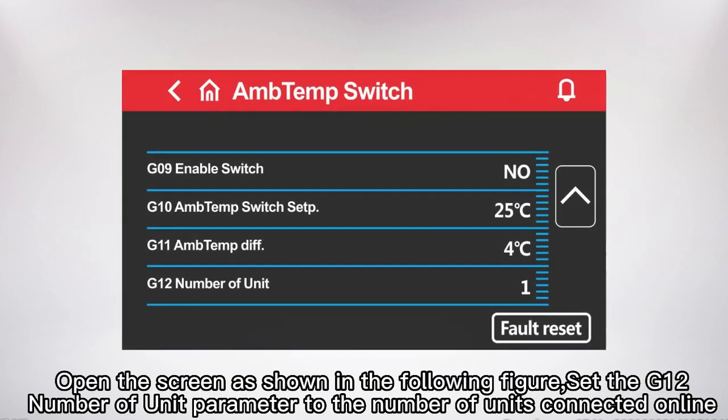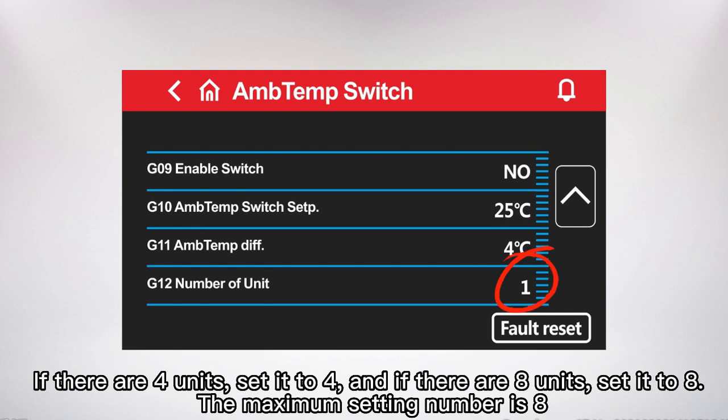Open the screen as shown in the following figure. Set the G12 parameter — number of units — to the number of units connected online. If there are 4 units, set it to 4; if there are 8 units, set it to 8. The maximum setting number is 8.